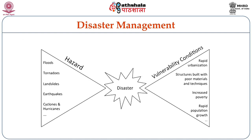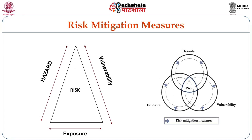I am now introducing disaster management to understand the relationship between hazards and disaster. Hazards such as floods, tornadoes, landslides, earthquakes, cyclones and hurricanes — when they meet with vulnerability conditions such as poorly built structures, increased poverty and rapid population growth — this is risk. When the risk is realized, it becomes disaster. This good triangle and circle overlapping helps you understand what risk is: risk is a function of hazard, vulnerability and exposure.